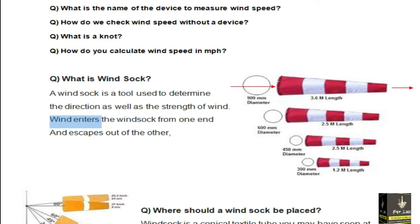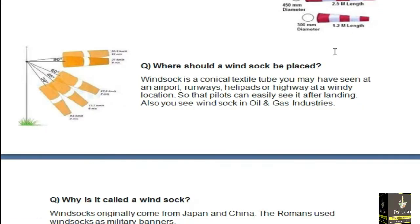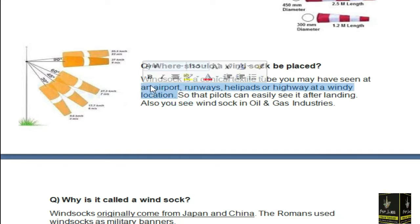Where should a windsock be placed? Windsock is mostly a conical textile tube you may see at airport runways, helipads, or highways at a windy location when there is so much wind and we need to know the location, direction, and strength of the wind. So we install the windsock on this location.